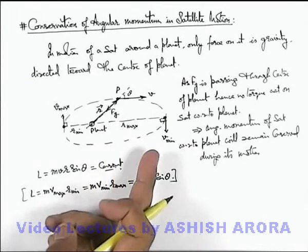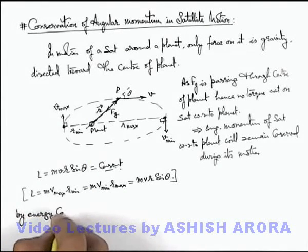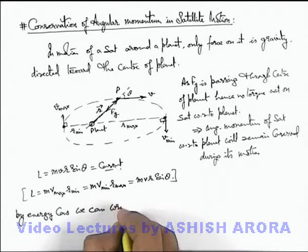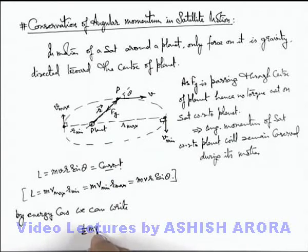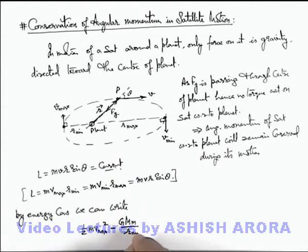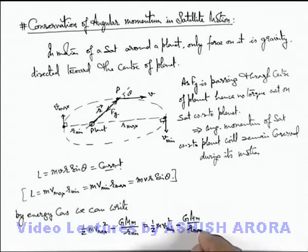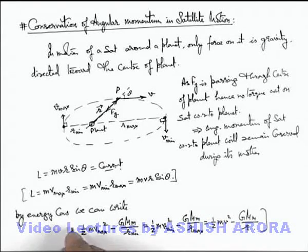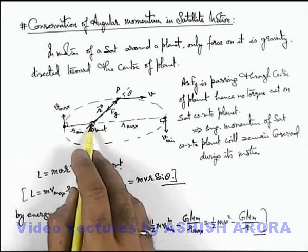One more equation we can write is for energy conservation. Since no external work is done on the system, by energy conservation, at the closest point where the satellite moves with maximum speed: ½mv²_max − GMm/r_min = ½mv²_min − GMm/r_max. At a general point its energy also remains the same: ½mv² − GMm/r. Using these two equations we can easily find the farthest and nearest point distances with respect to the planet, r_min and r_max.